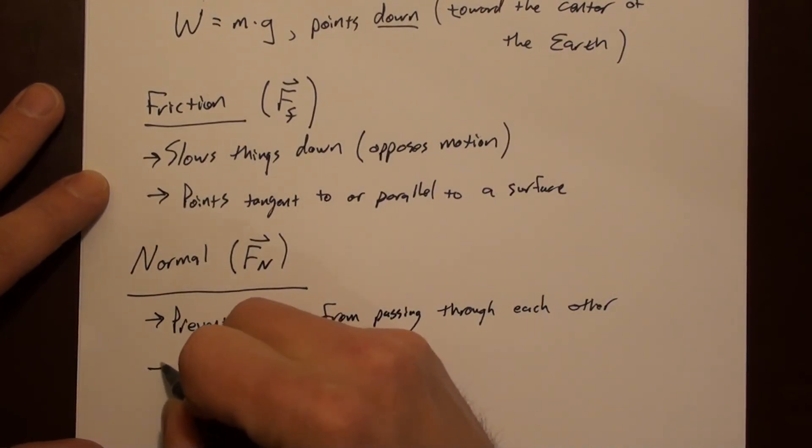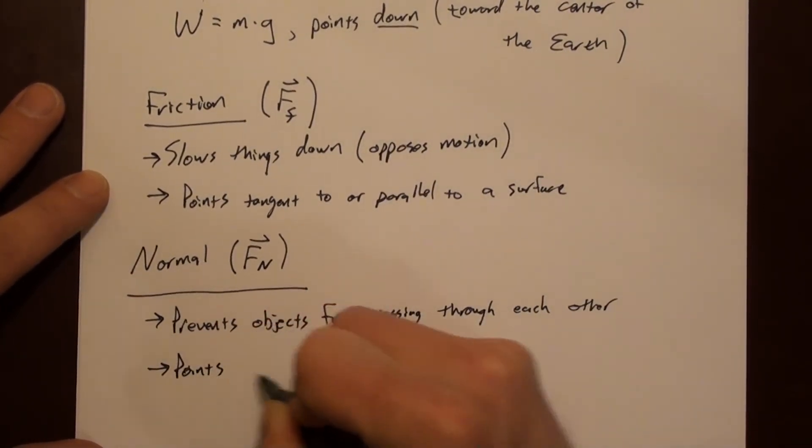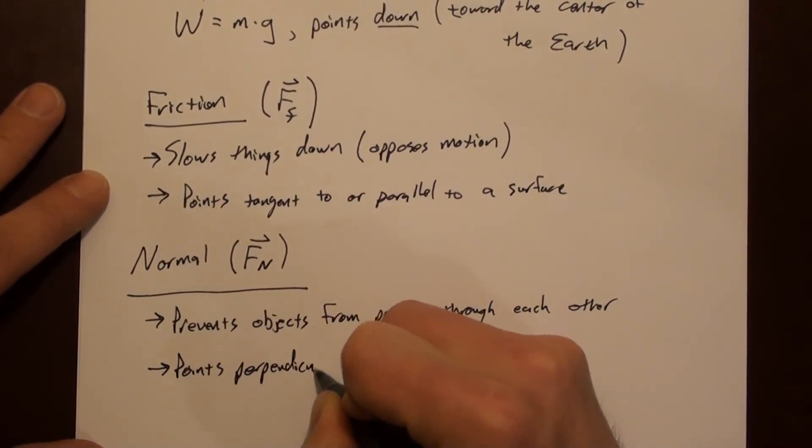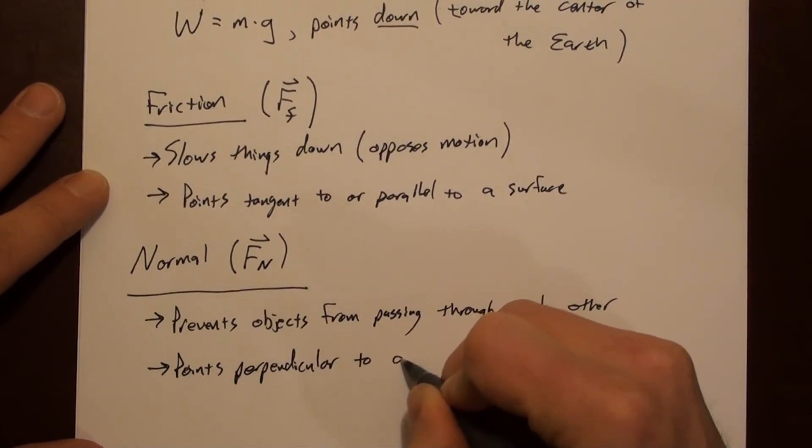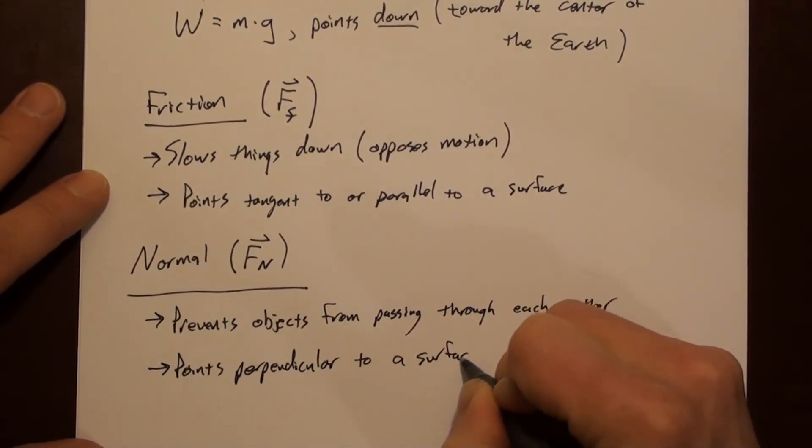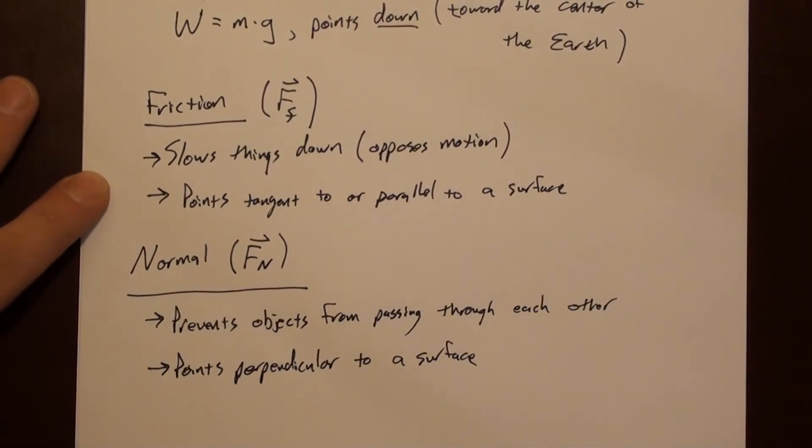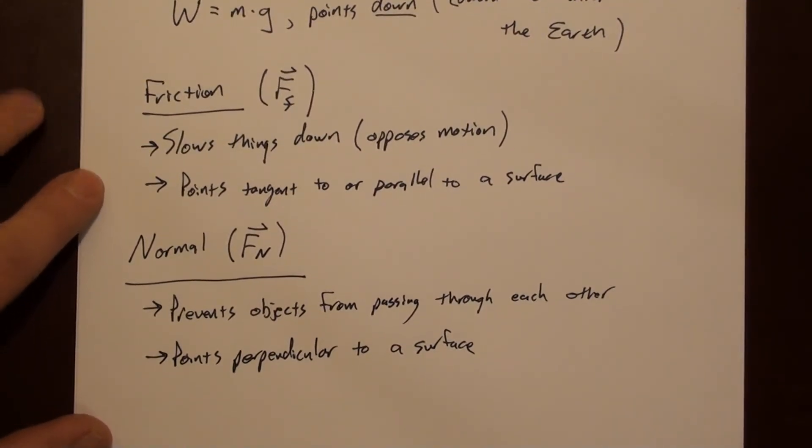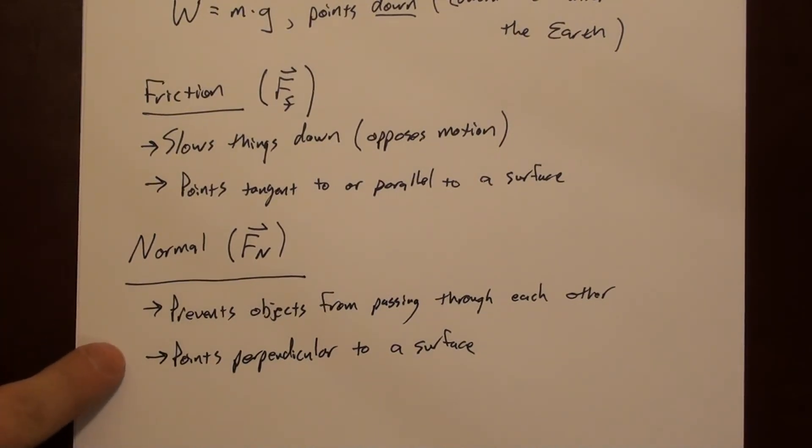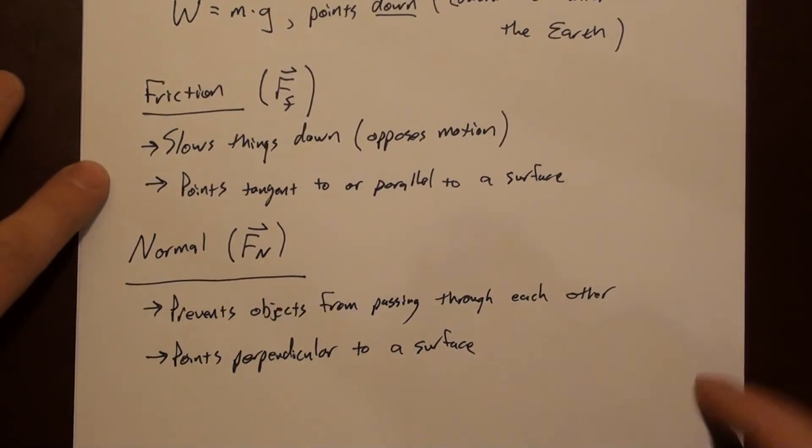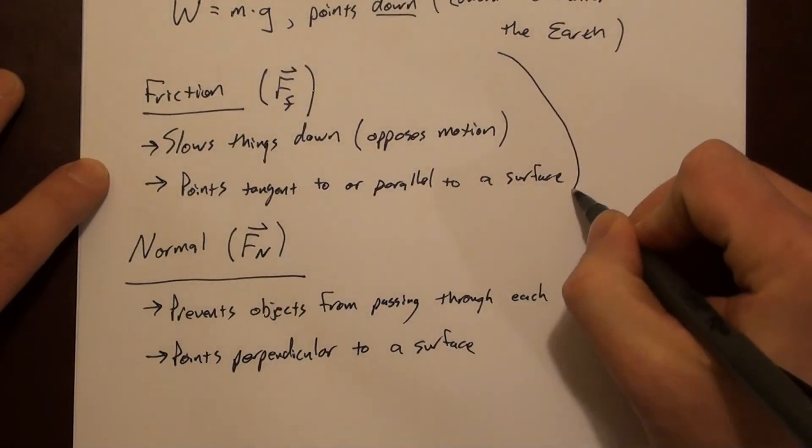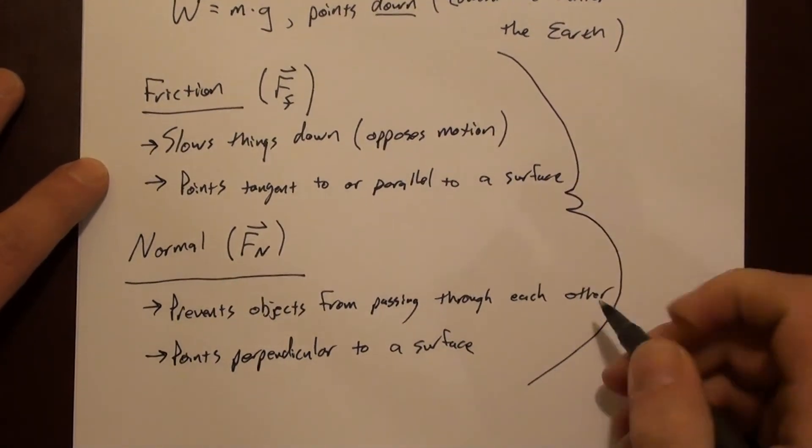So this is like when you stand on the floor, the floor pushes back. The floor pushing back on you, keeping you from going through the floor, that's the normal force. So you can tell here that this always points perpendicular to a surface. It's interesting to note here, friction is tangent to or parallel to a surface, and the normal force is perpendicular to a surface. So these two forces together describe interactions with surfaces.